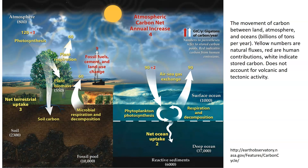Plants get their carbon by fixing it through photosynthesis, meaning they pull it in out of the atmosphere. The yellow numbers here are natural flux numbers, and the red are human contributions. In photosynthesis, we get 120 natural gigatons coming in, plus three from human contributions. We have respiration going up into the air, which releases 60, and that gives us plant biomass, which is another large pool of about 550 gigatons. We get a net terrestrial uptake of about three.